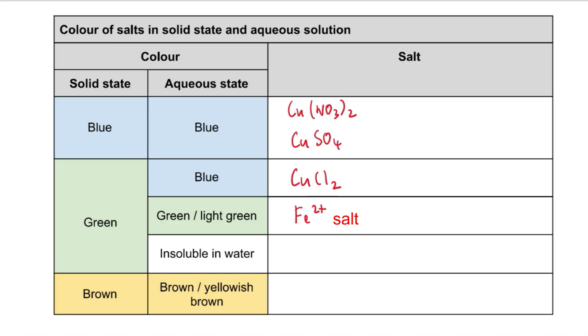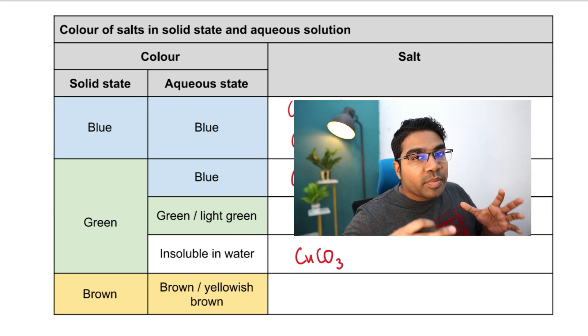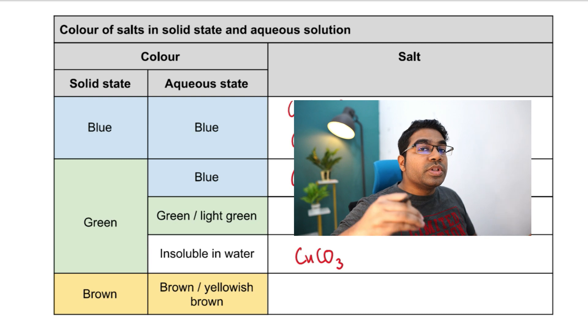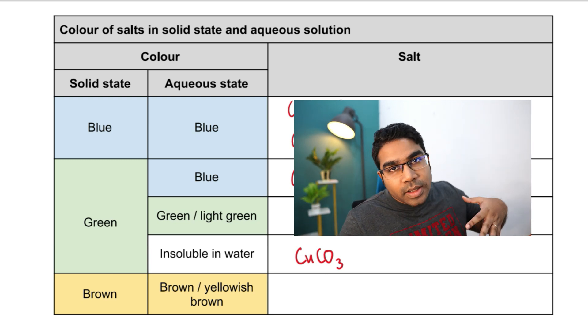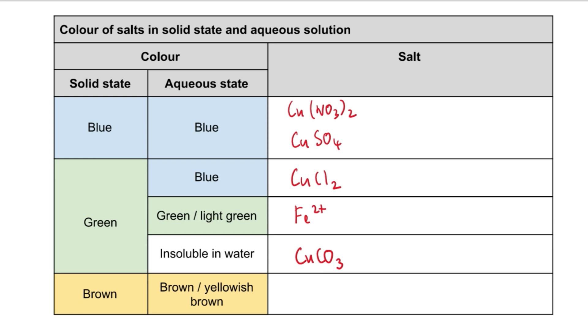If we have a green color salt that is insoluble in water, then the salt is copper(II) carbonate, CuCO3. If we have a brown salt in the solid state which also dissolves to form a brown color solution, a brown solution indicates the presence of Fe3+ ion — this simply indicates it is a salt containing Fe3+.